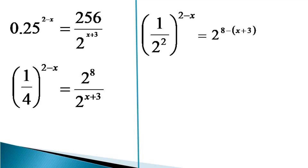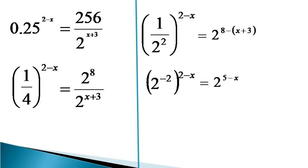On the left hand side, 1 by 2 squared can be represented as 2 raised to the power minus 2, so the left hand side becomes 2 raised to the power (minus 2) raised to the power (2 minus x). This becomes equal to 2 raised to the power (5 minus x) after the indices on the right hand side are simplified.